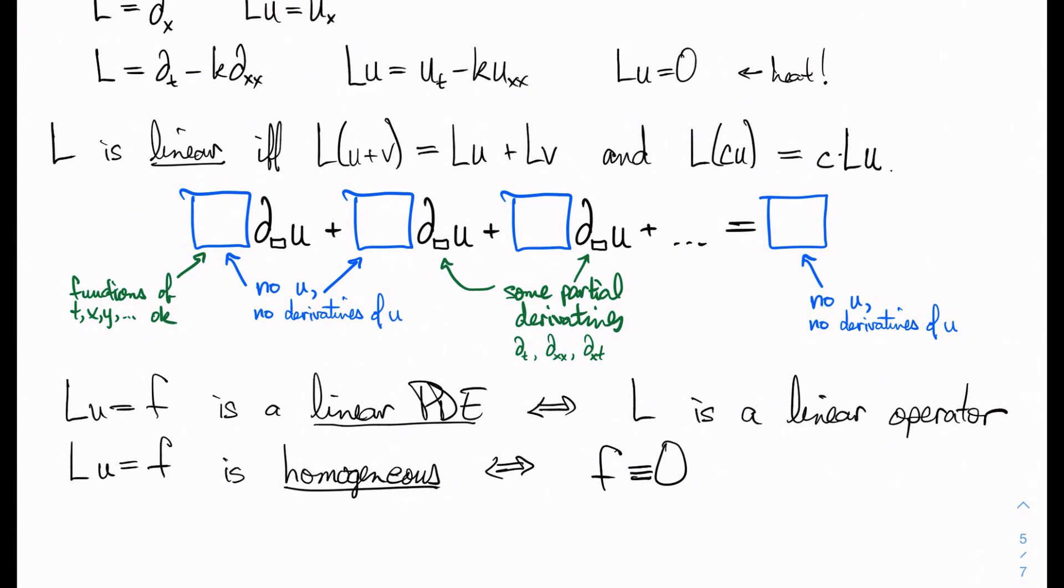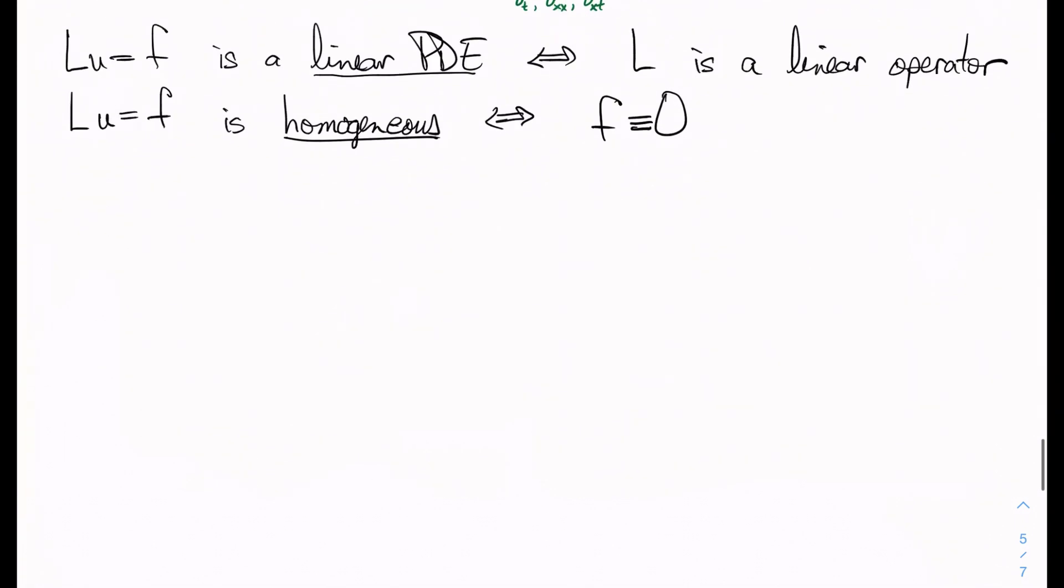So let's look at some examples for each of these. We'll take ut to be sine of x times the ux plus e to the xt, and we'll look at ut equals sine of u times ux, and we'll take ux squared to be 4u plus x, and we'll take ut minus k u double xx equal to 6.